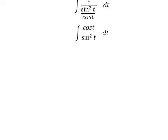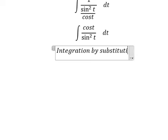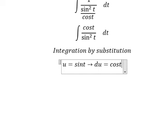We can use integration by substitution, so I will put u equals sine t. Later we need to take the derivative for both sides and we have cosine t dt.